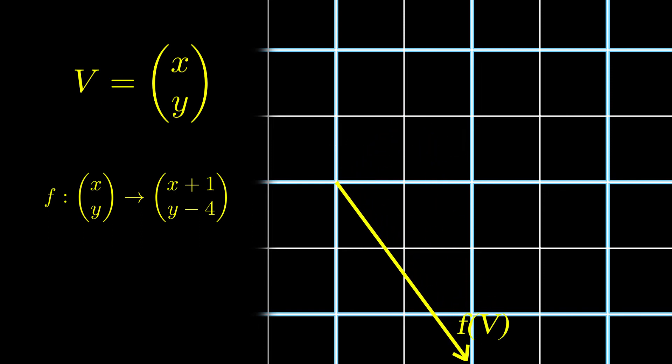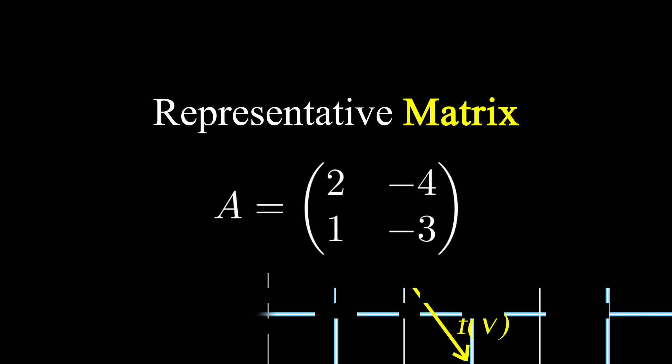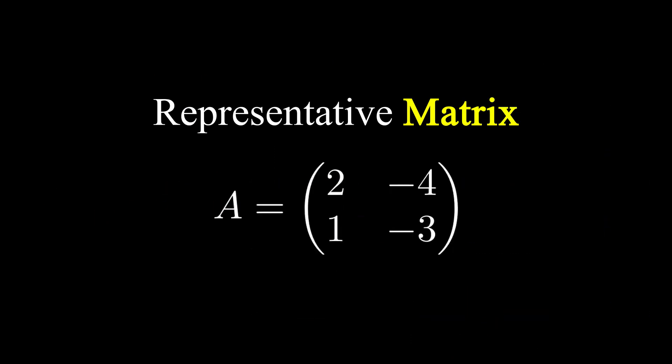While this definition of the function works very well, another way to represent it is by building one of its representative matrices. So now, to compute the output of a vector through that function, you only have to multiply the vector by the function's representative matrix.